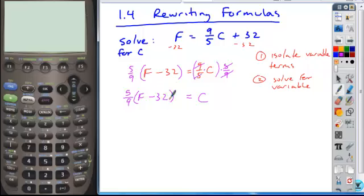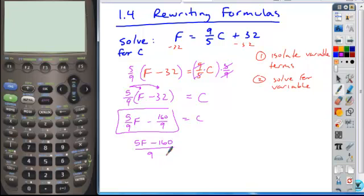So when you're looking at this, depending on what is being asked, you might need to distribute through so that you're not dealing with the factors. And there's a couple different ways that you would possibly distribute this. You might say 5/9 F minus, then 5 times 30 is 150, 5 times 2 is 10, 150 plus 10 is 160 over 9. So this is one way that you might express your answer. Or because your denominators are the same, it's also possible that you might express this as 5F minus 160 all over 9 is equal to C.